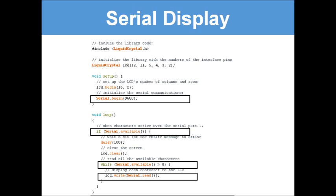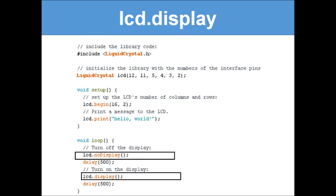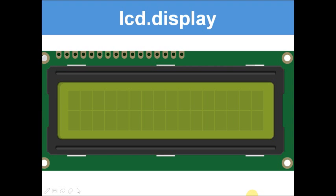Now, more important than blink and cursor, is `lcd.display()`. This turns the display on and off. `lcd.noDisplay()` wipes out whatever is on the screen, and `lcd.display()` brings it back. So if you've written 'Hello World', it will flash on and off. By changing the delay value in the loop you can control how long it stays on before turning off again.